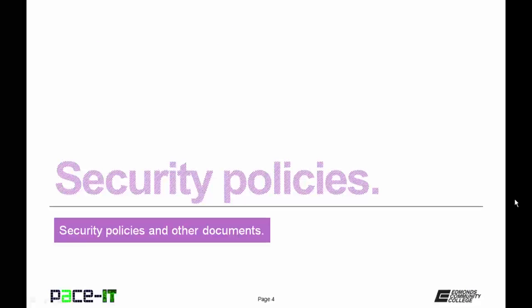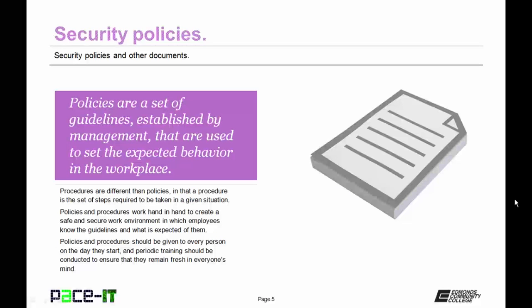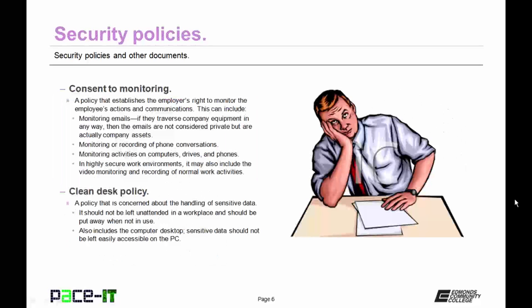I'm going to begin by discussing security policies. Policies are a set of guidelines established by management that are used to set the expected behavior in the workplace. Procedures are different than policies in that a procedure is a set of steps required to be taken in a given situation. Policies and procedures work hand-in-hand to create a safe and secure work environment in which employees know the guidelines and what is expected of them. Policies and procedures should be given to every person on the day they start, and periodic training should be conducted to ensure that they remain fresh in everyone's mind.